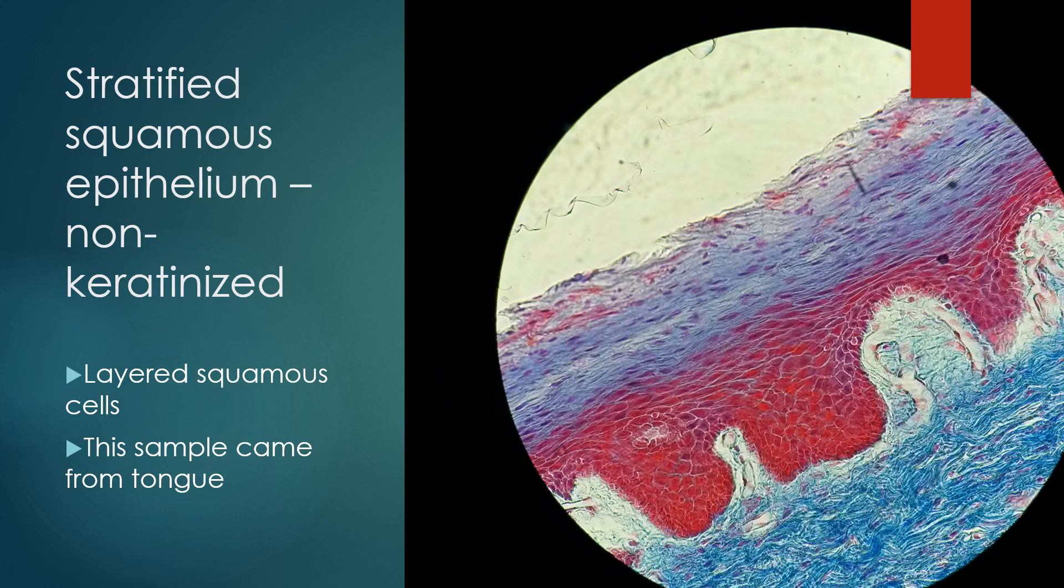Number two was stratified squamous epithelium non-keratinized. These are layered squamous cells. When you're looking at a stratified epithelial tissue, you're going to want to go by the shape of the cells furthest away from the basement membrane.